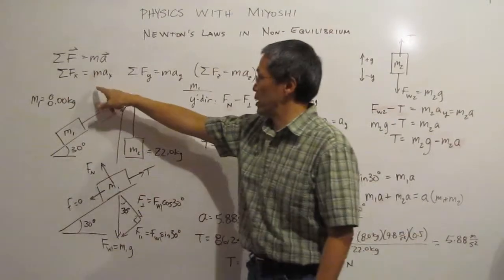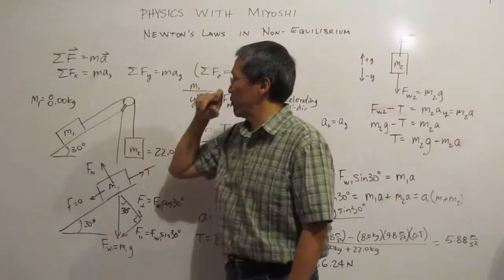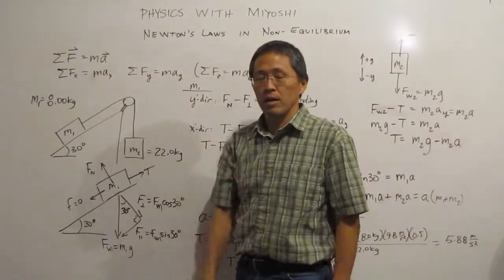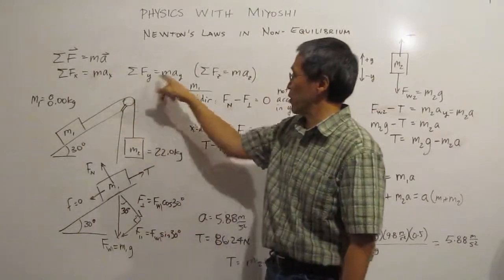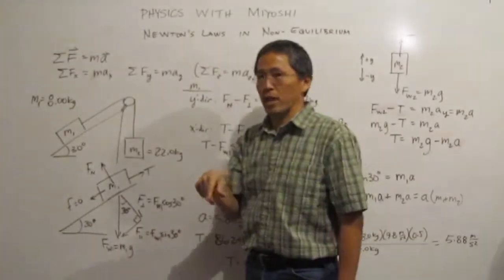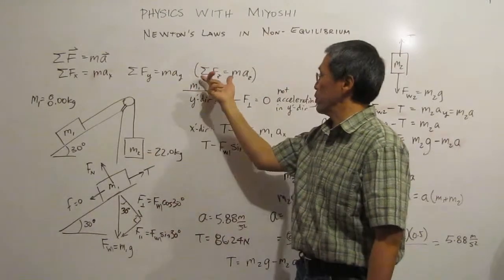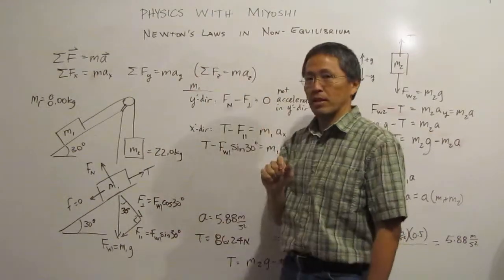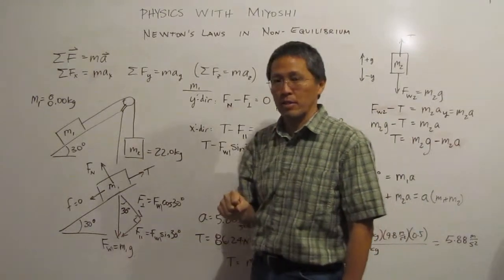Or if we look at it in 2D, all our x components of our forces is going to sum up to equal the mass times acceleration. The same thing with our y. All our y forces added up will give us our mass times acceleration in the y direction. And if we were doing 3D, we would go to the z direction as well. All those forces would add up to mass times acceleration in z direction.